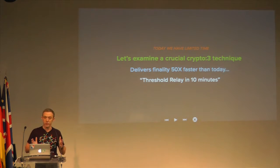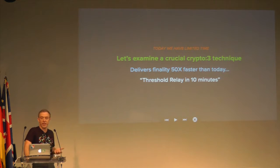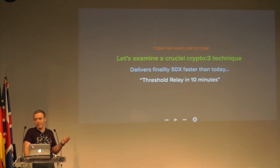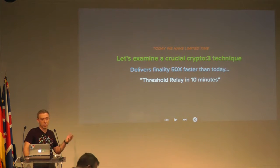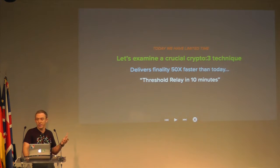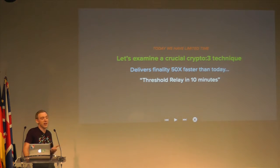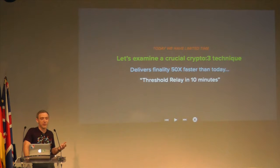We have limited time, so I thought we'd look at a crucial Crypto3 technique called Threshold Relay, which might also be applied in Ethereum. The reason Threshold Relay is interesting is that it promises to provide finality speed in public blockchains with similar speed that private networks provide finality — meaning a transaction is irreversible in just a few seconds. And it's not achieving that with an old-school traditional BFT protocol, which is unsuitable for public networks because it requires point-to-point connections and can only have a handful of validators. This thing works with networks of unlimited size and a broadcast network — imagine a network of a million mining clients still getting finality in just a few seconds. That's roughly a 50x speed-up compared with Ethereum today.